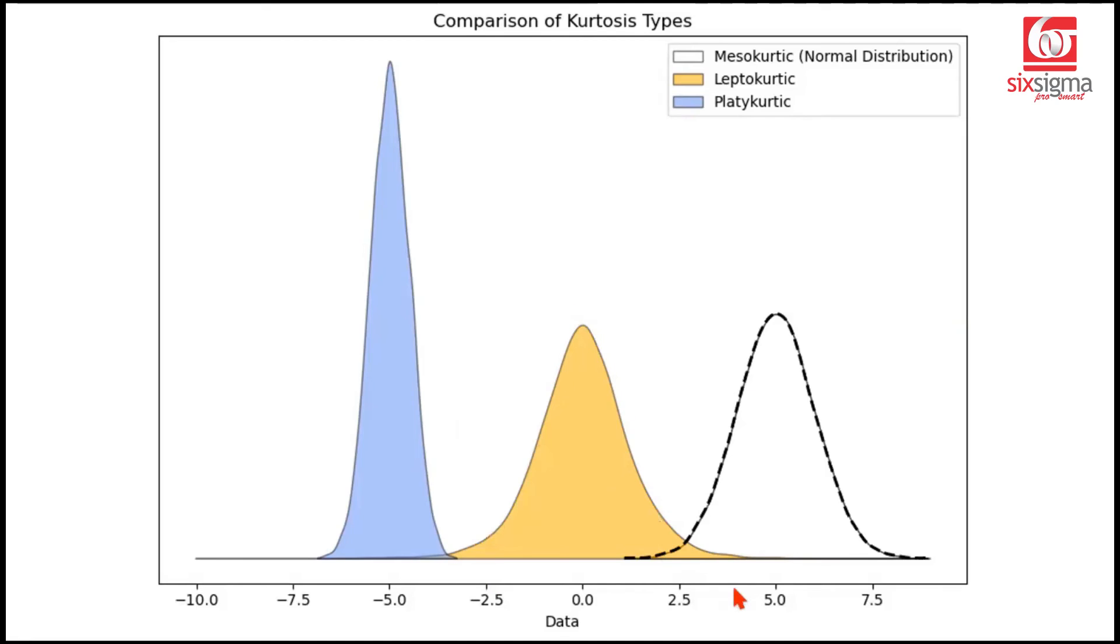This is leptokurtic, and this is platykurtic. Whereas the normal distribution in general, which has no excess kurtosis, is known as mesokurtic. So what is the kurtosis for a leptokurtic distribution? It will be greater than three. And in case of a platykurtic distribution, this value will be less than three.